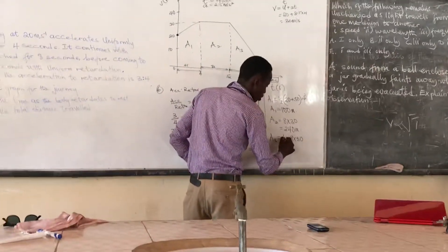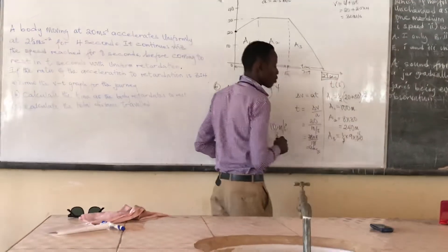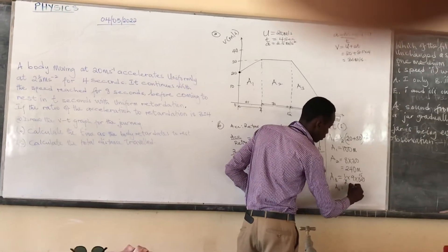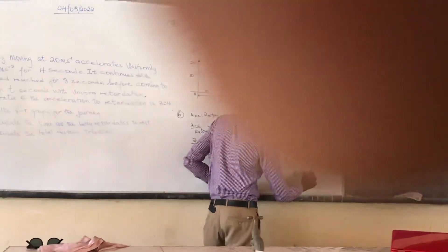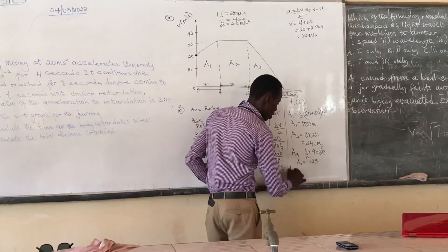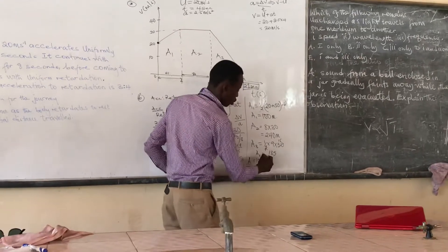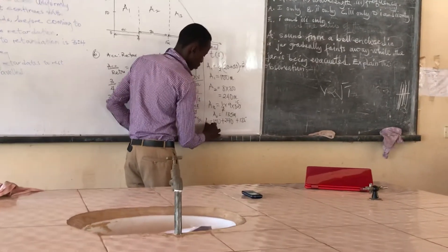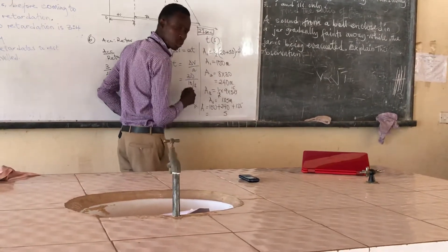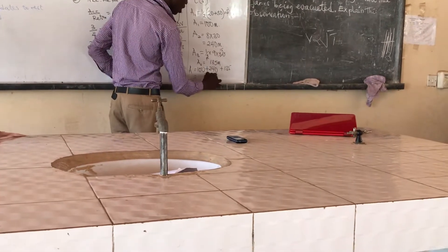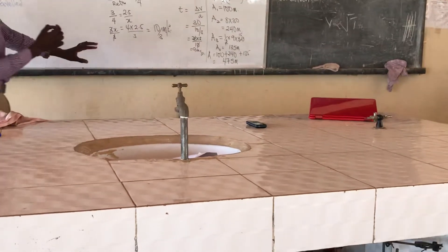Area 3 is a triangle for the retardation phase. Its area is one-half times base times height, where the base is 9 seconds and the height is 30 meters per second. One-half and 30 simplify: the 2 cancels with 30 to give 15. So Area 3 equals 9 times 15 equals 135 meters. The total distance is Area 1 plus Area 2 plus Area 3: 100 plus 240 plus 135 equals 475 meters. That is the answer to Part C.